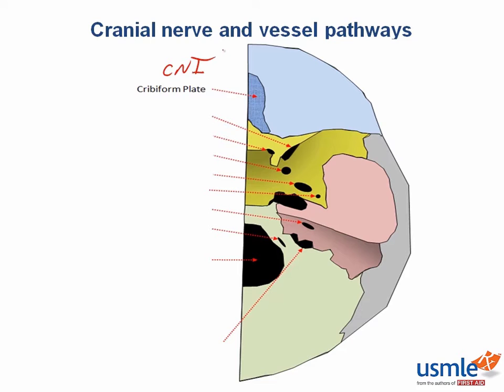Next, on the sphenoid bone, we have the optic canal. This is where cranial nerve 2, as well as its associated arteries — the ophthalmic artery and the central retinal vein — pass through.